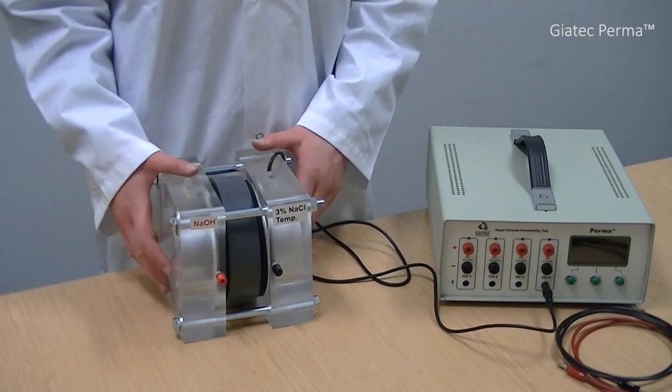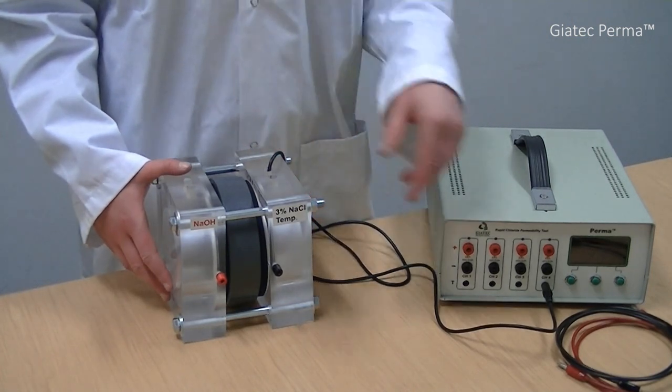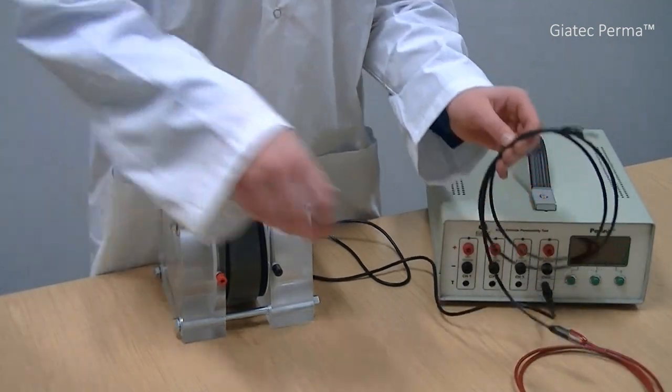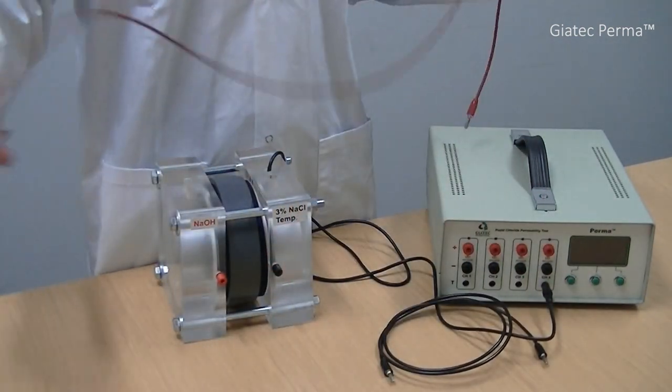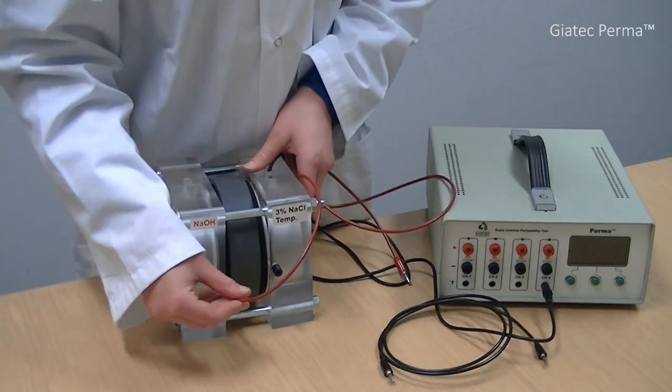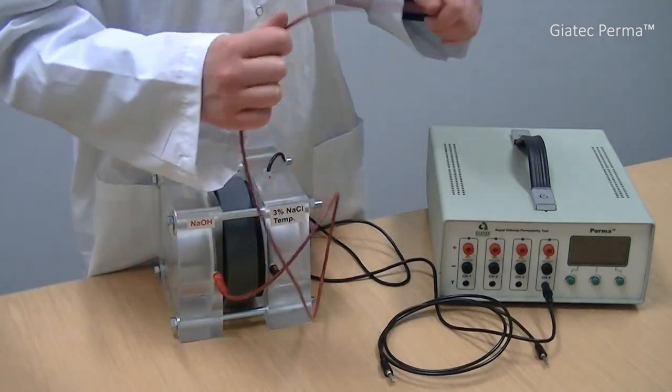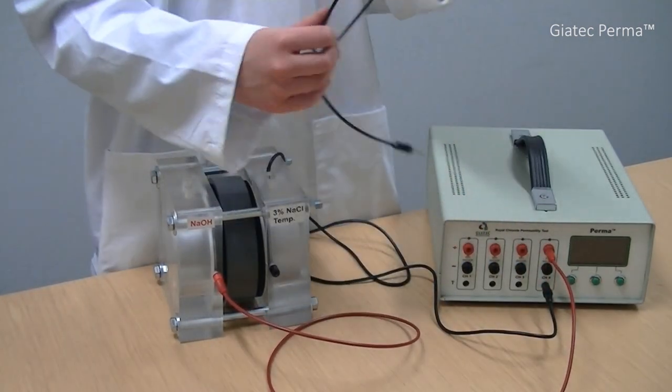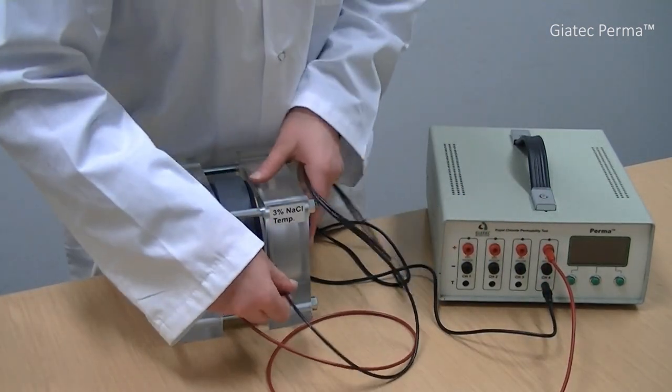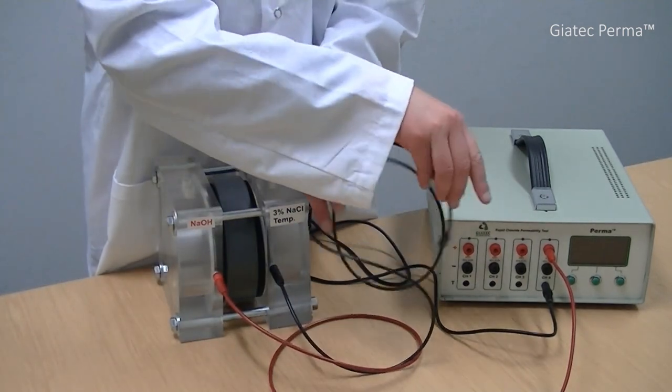Then, the test cell needs to be connected to the terminals on the device using the red and the black cables. I connect the red cable to the red jack of the cell and the red jack of the device. And then I connect the black cable to the black jack of the cell and the black jack of the device.